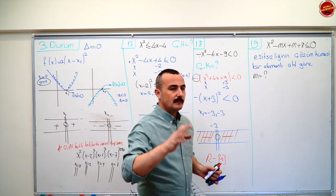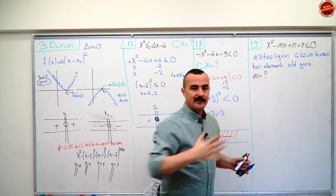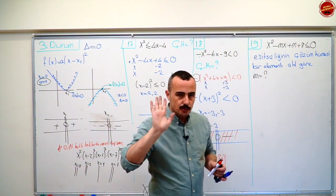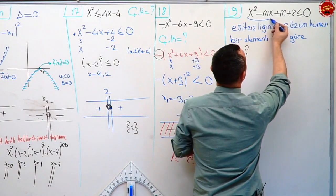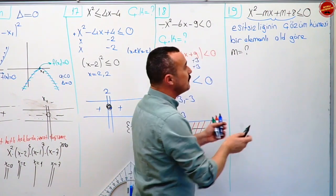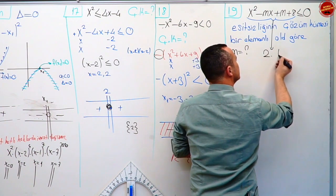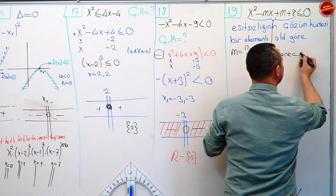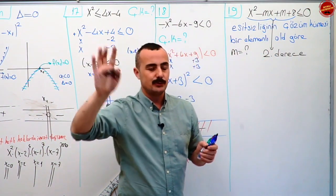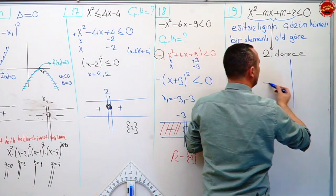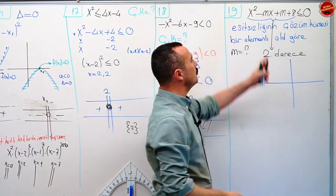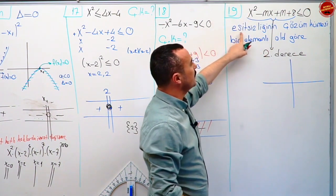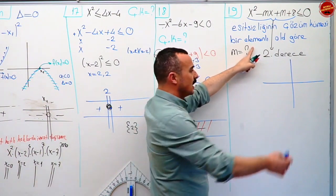Evet on dokuz. Yine bize parametreli bir şeyler vermiş. Eşitsizliğinin çözüm kümesi bir elemanlıymış. Bunu iyi anlayabilmen için şöyle anlatacağım. Bu kaçıncı dereceden denklem? İkinci dereceden. Grafiği paraboldür. Şimdi senden bir parabol istiyor sıfırdan küçük. Nasıl bir parabol? Kolları yukarı doğru. Kolları yukarı doğru bir parabolün eşitsizliğinin çözüm kümesinin bir elemanlı olmasını istiyor.